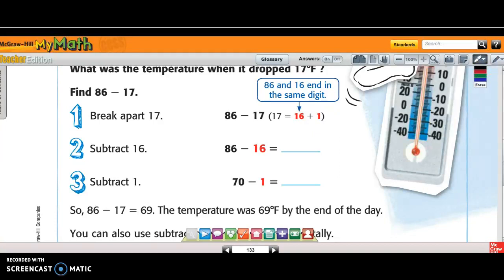And then they subtracted 16, 86 minus 16. And they went 6 minus 6 is 0, and 8 minus 1 is 7. And then they subtracted 1, and they got 70 minus 1. 0 minus 1, can I do that? No, I can't do that, can I? So what do I do?